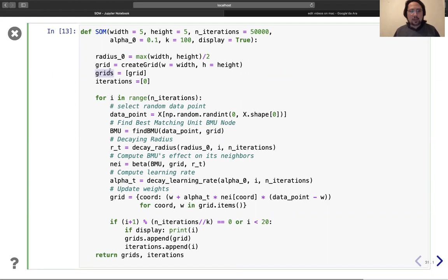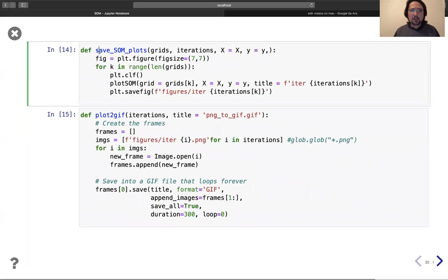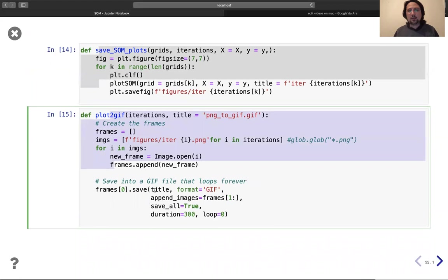It stores the grids and it also stores the iterations. So this self-organizing map function returns some function, grids, and iterations. This is for saving the plots.